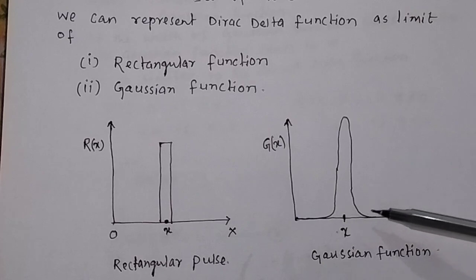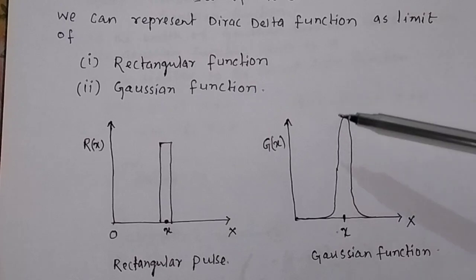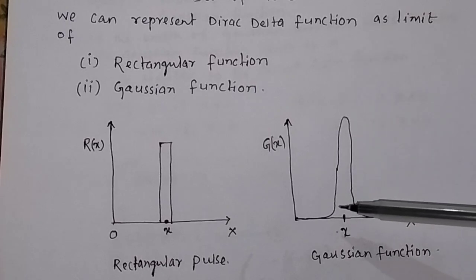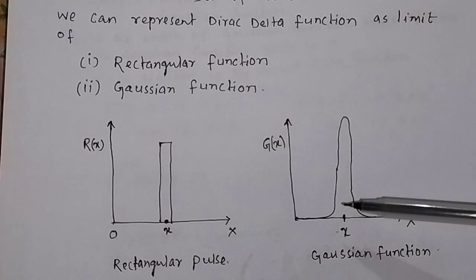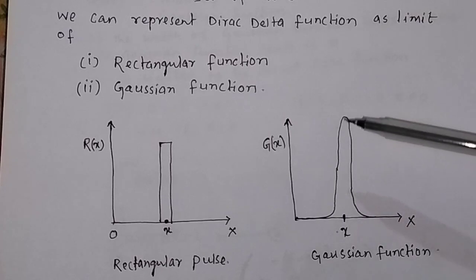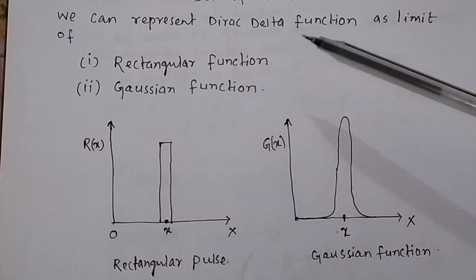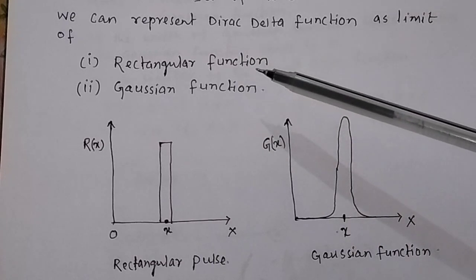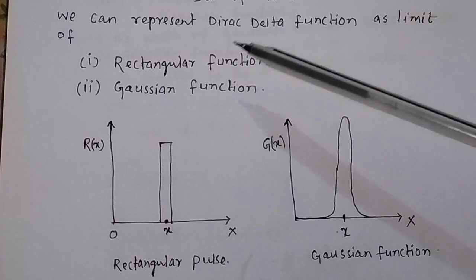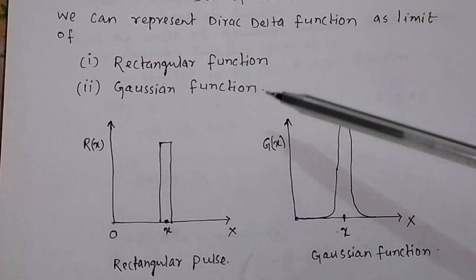Similarly, in the case of a Gaussian function, at x = 0, the y-value is very large. So the Gaussian function can also be defined as a Dirac delta function — that is, δ(x) = ∞ at x = 0. This is why we can represent the Dirac delta function as the limit of a rectangular function or as the limit of a Gaussian function.